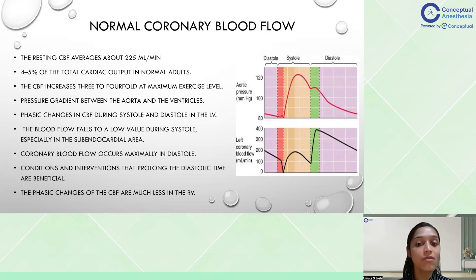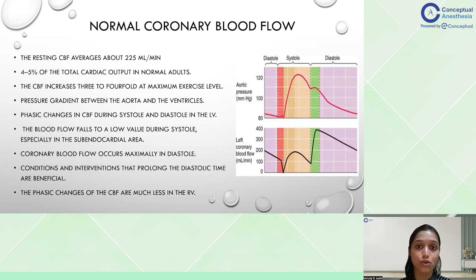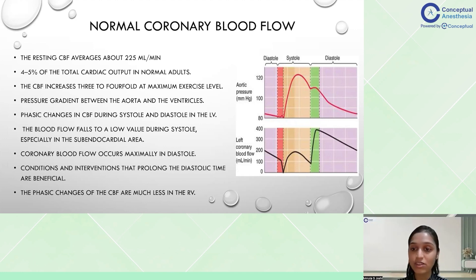Coronary blood flow is determined by the pressure gradient between the aorta and the ventricles, because at that time the aortic valve is closed. There are phasic changes in coronary blood flow during systole and diastole in the LV. Blood flow falls to a low value during systole, especially in the subendocardial area, because the myocardium — the entire left ventricular wall — is contracting, compressing the subendocardial vessels. Flow occurs maximally in diastole when the LV is relaxed.